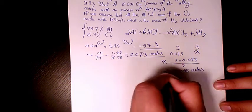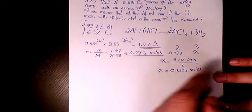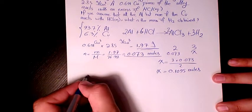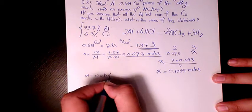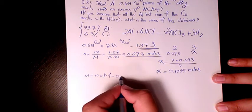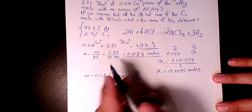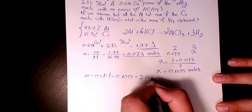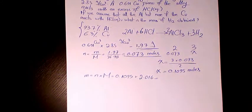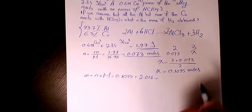Three times 0.073 divided by two, which makes it 0.1095 moles. That's the number of moles of hydrogen produced, H2 produced. Now I need to know the mass. Mass is n times m, number of moles times molar mass.